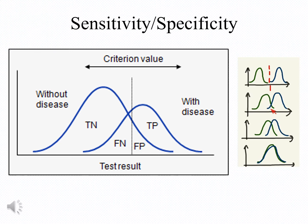We can have four different possibilities with these results. The true negatives are people without the disease who are negative for the test. The false negatives are people who are negative for the test but are actually patients. The true positives are people who have the disease and are positive for the biomarker. The false positives are people who don't have the disease but are positive for the biomarker. Ideally, we want no overlap in results between patients and those without disease.